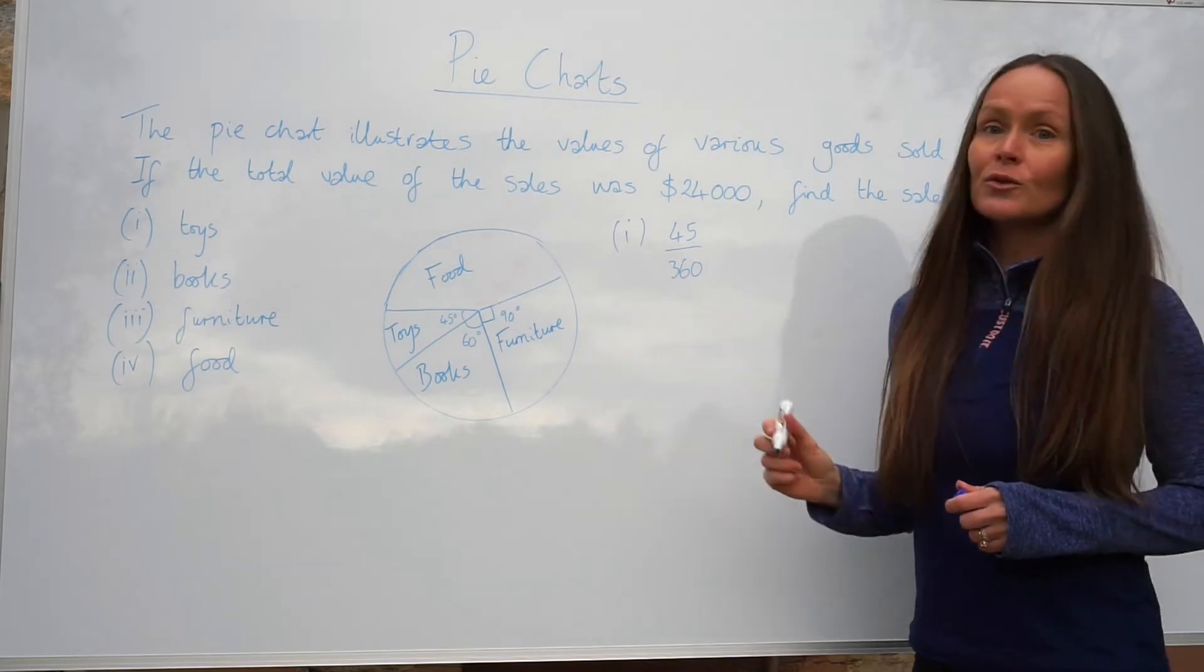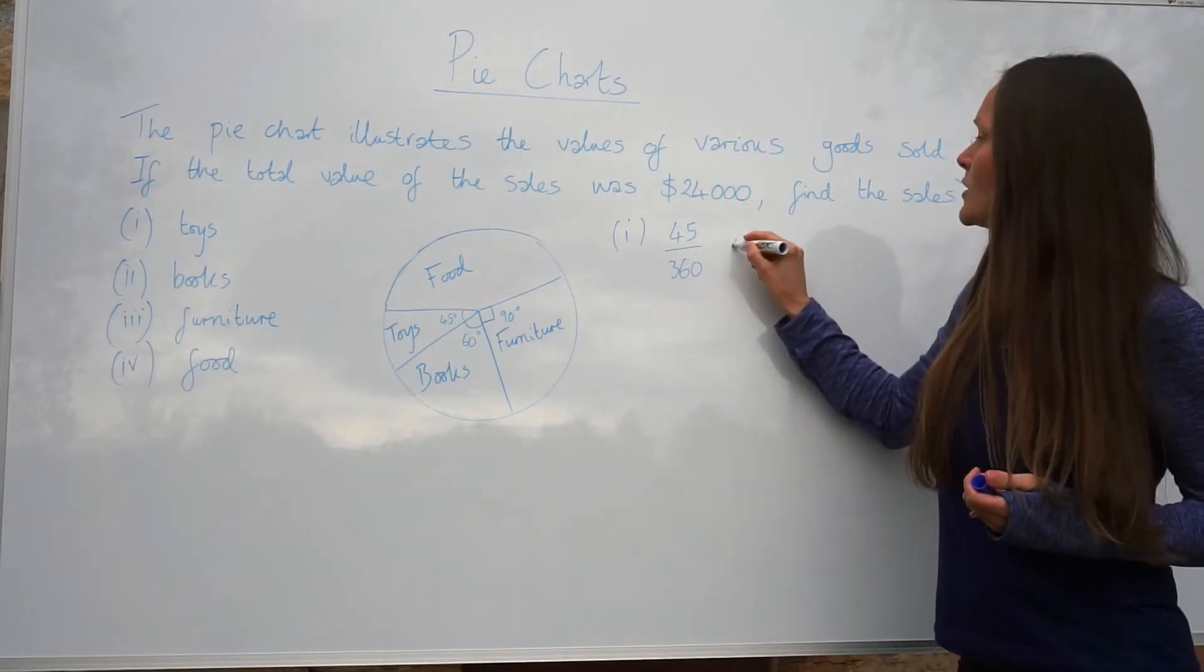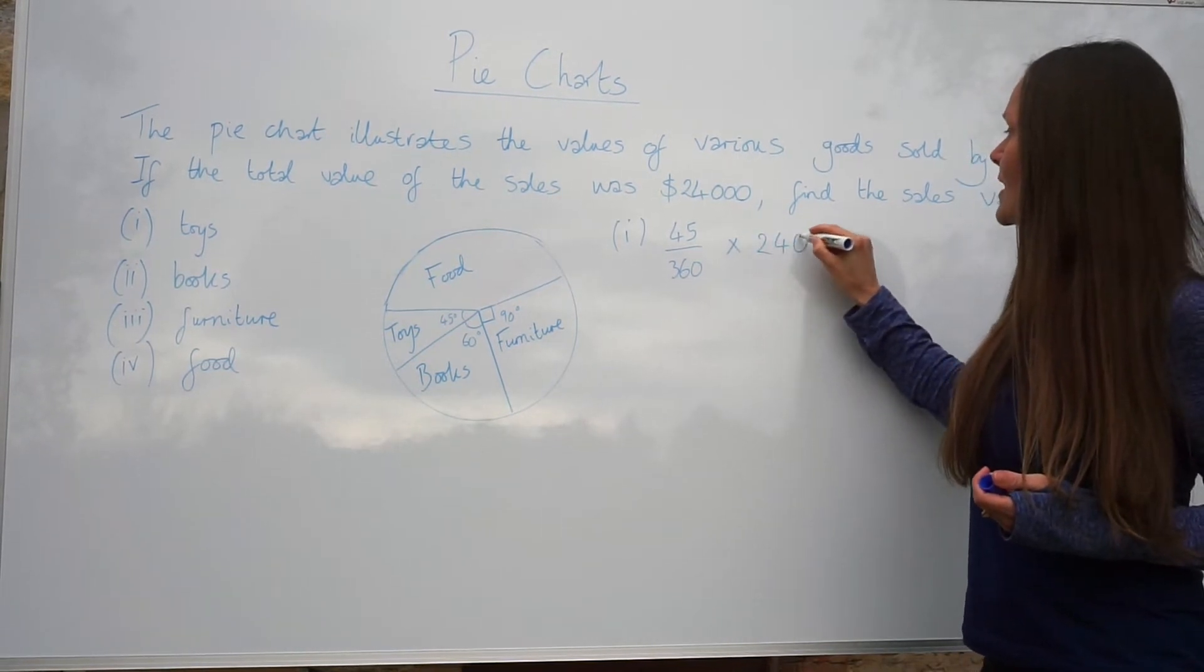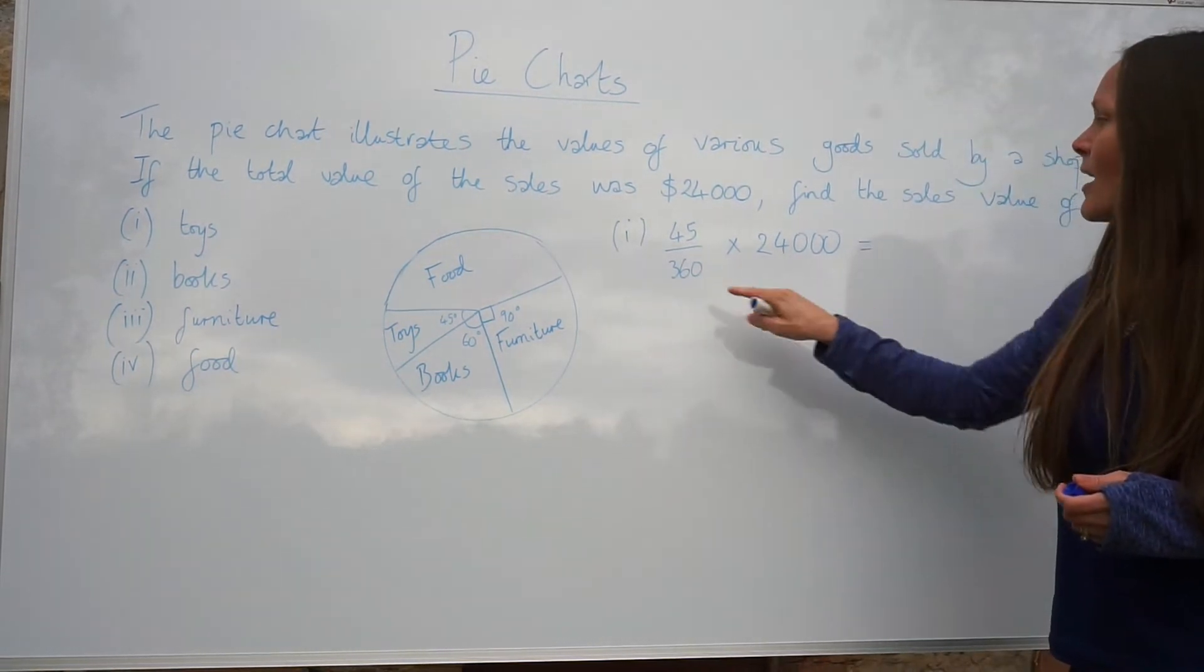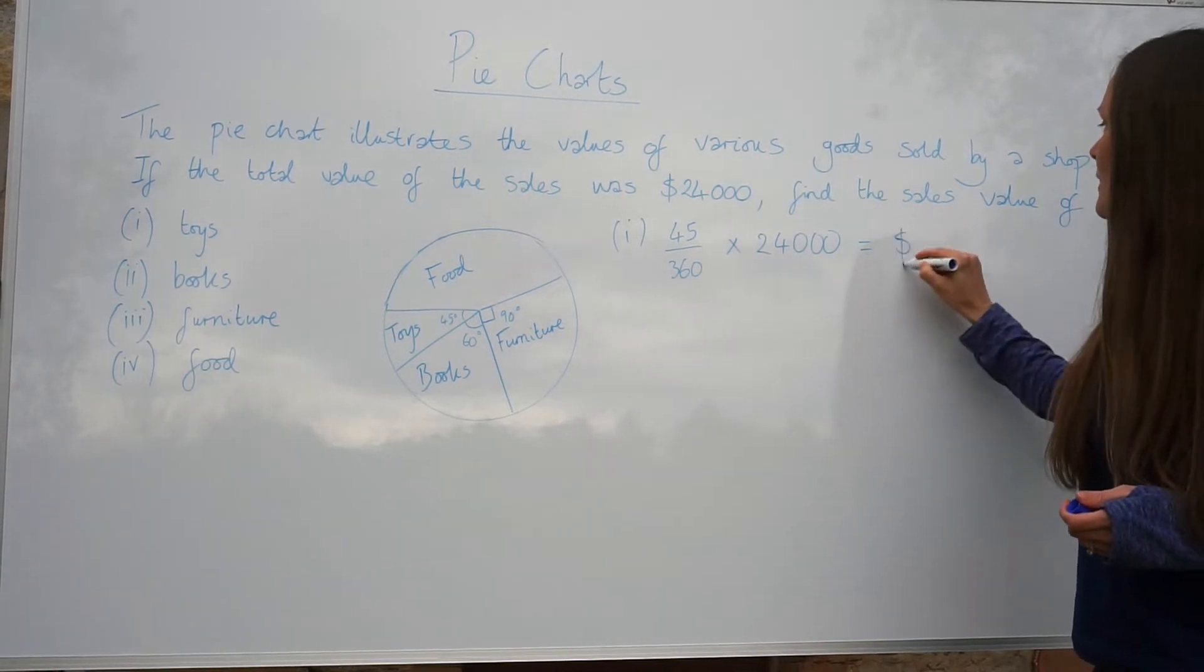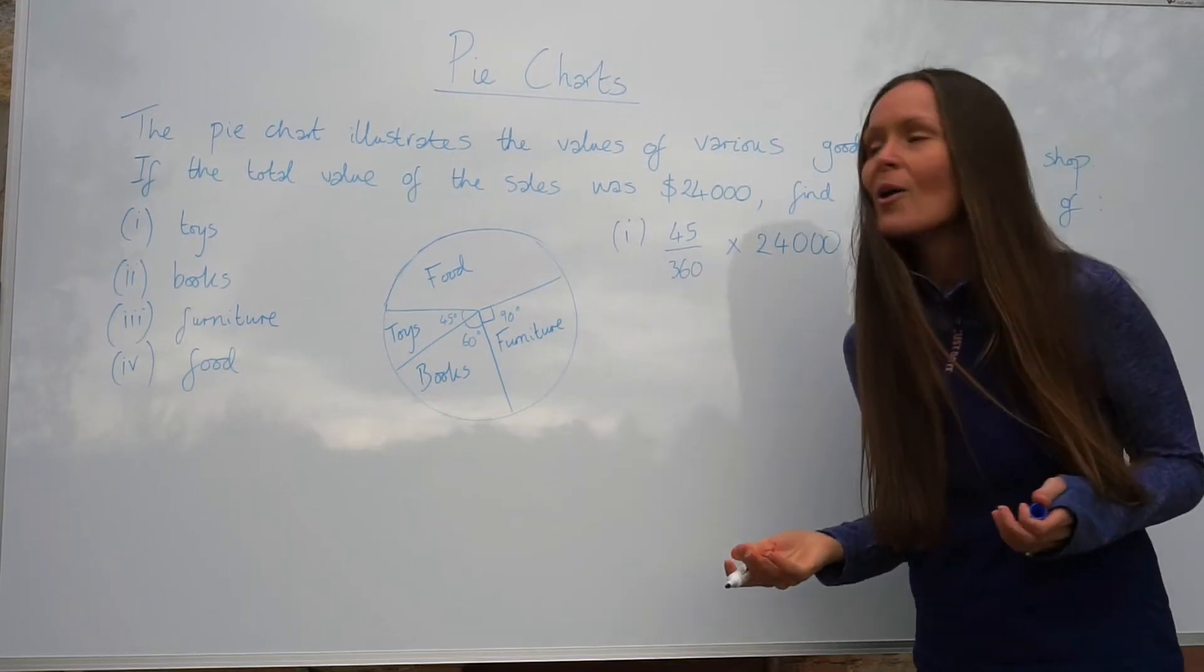Now that we've got the fraction of toys, to work out the value made for toys, you need to multiply by the total amount made from sales. So $24,000. If you multiply that fraction with the total value of sales, it gives you $3,000. So we've already done part one.